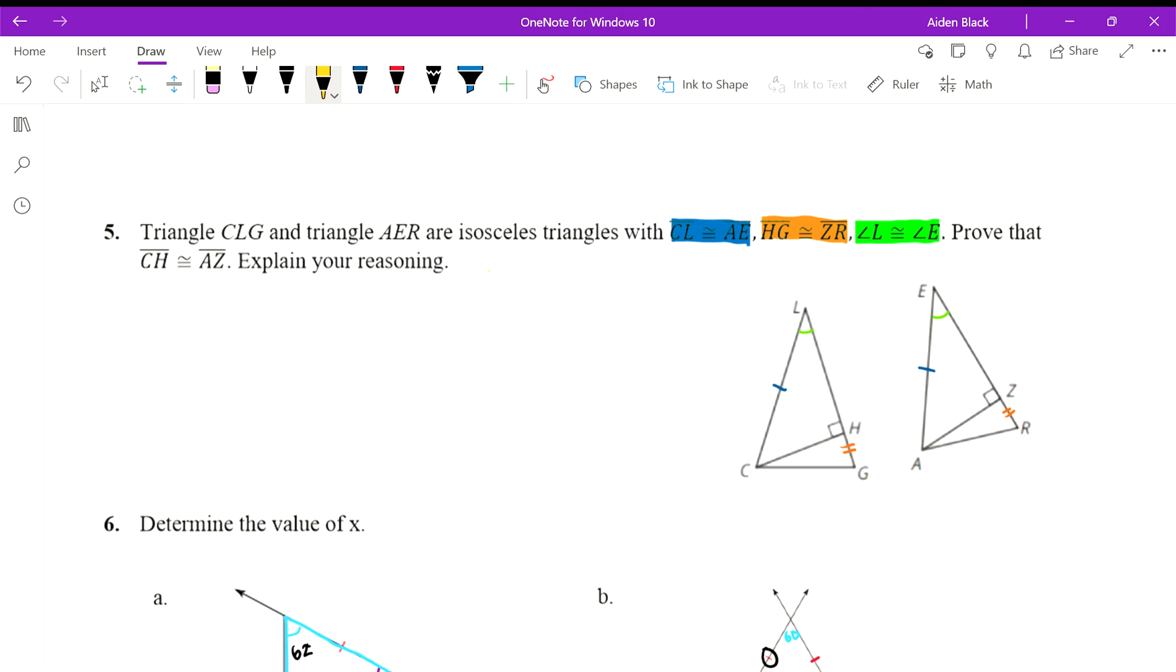First, we know these are isosceles triangles, so this side LH plus HG, which is LG, is congruent to LC. These lengths are all congruent, and in fact they're congruent to each other. So all four of these side lengths are congruent: LC, LG, EA, and ER.